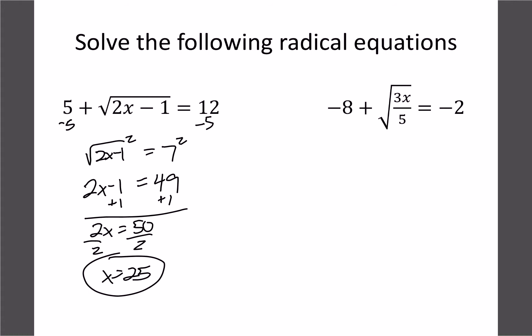so 2 times 25 is 50, minus 1 is 49, square root of 49 is 7, 7 plus 5 is 12, so that's a good answer.